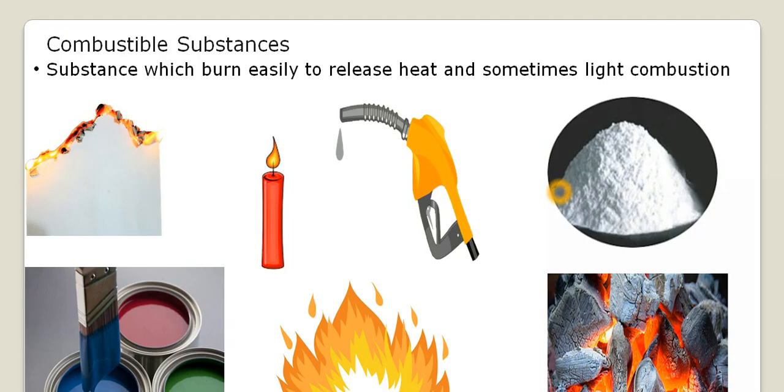What are combustible substances? Those substances which undergo combustion, that is they burn easily to release heat and sometimes light. So combustible substances are the ones which undergo combustion. They burn easily and they release heat and sometimes light. Not all substances undergo combustion. Those substances which can burn to release heat are called combustible substances.